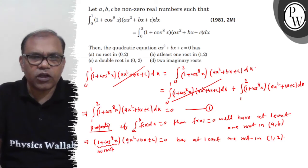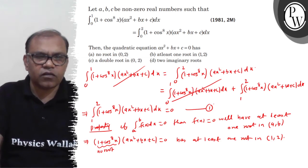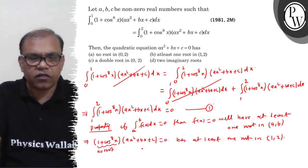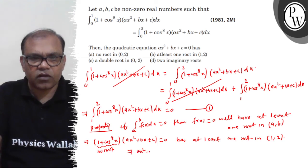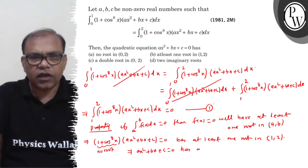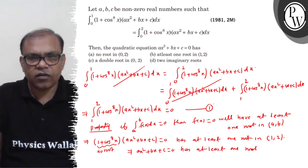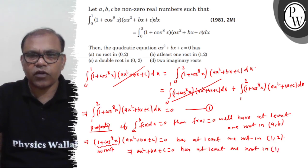This means whichever root emerges, it will emerge from ax² + bx + c = 0. This implies ax² + bx + c = 0 has at least one root in (1, 2).